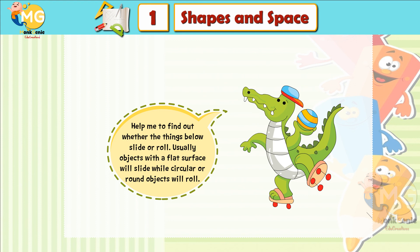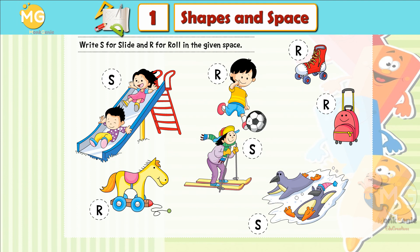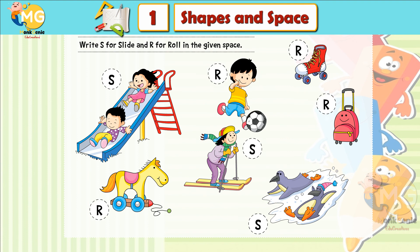Let's look at things that roll and slide. Help me to find out whether the things below slide or roll. Usually objects with a flat surface will slide, while circular or round objects will roll. Write S for slide and R for roll.